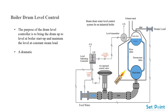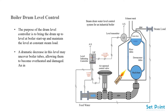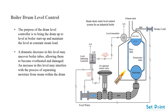A dramatic decrease in this level may uncover boiler tubes, allowing them to become overheated and damaged. An increase in this level may interfere with the process of separating moisture from steam within the drum, thus reducing boiler efficiency and carrying moisture into the process or turbine.